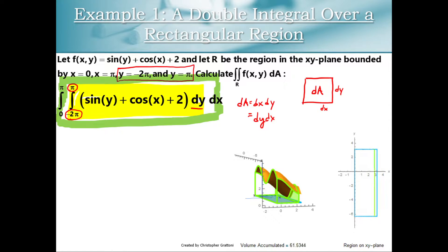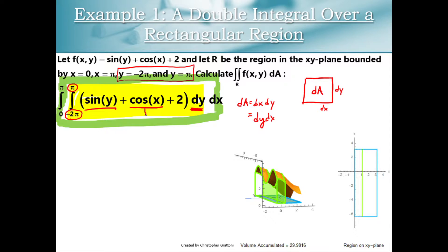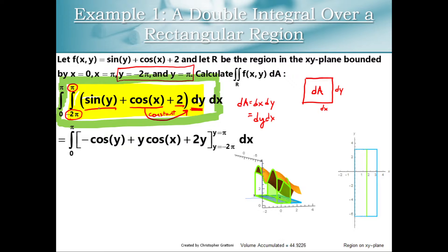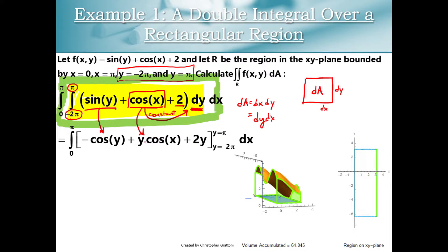We can ignore our outermost integral to start, so let's just look at this yellow single integral on the interior. We need the antiderivative of sine of y with respect to y, the antiderivative of cosine of x with respect to y — treating cosine of x as a constant relative to y — and the integral of 2 with respect to y. The antiderivative of sine of y is negative cosine of y. The antiderivative of cosine of x is y cosine of x, because we're treating cosine of x as a constant relative to y — so the integral of a constant is that constant times our variable y. And the integral of 2 with respect to y is 2y.